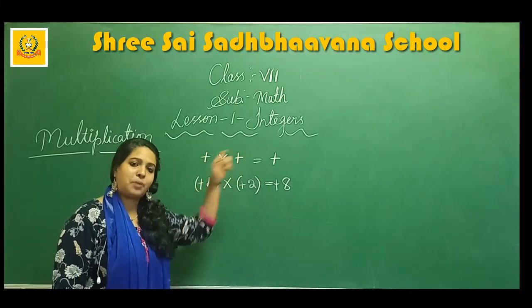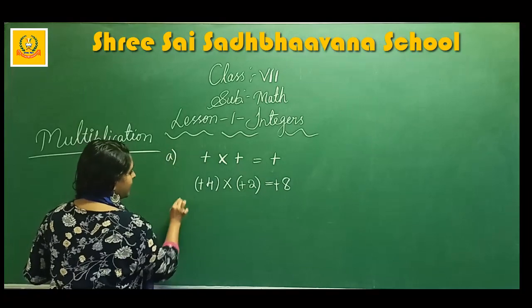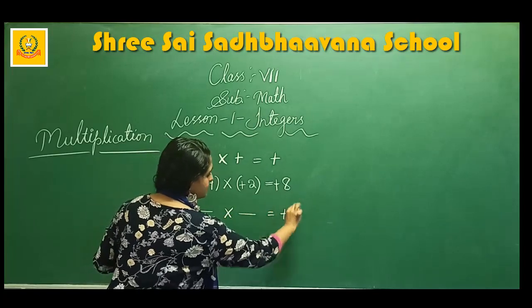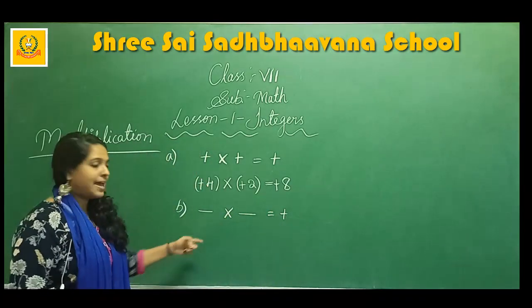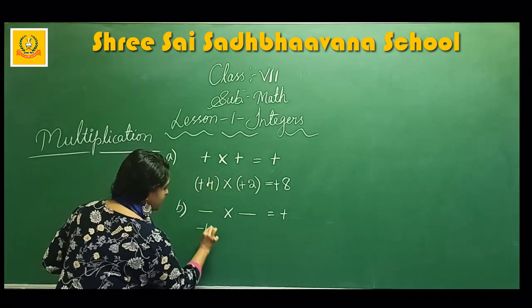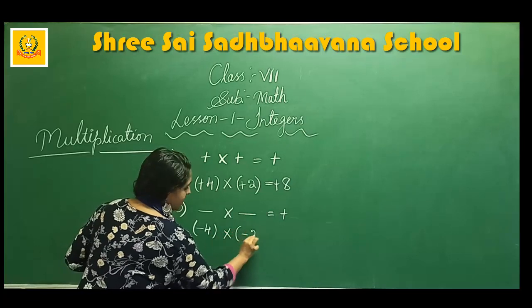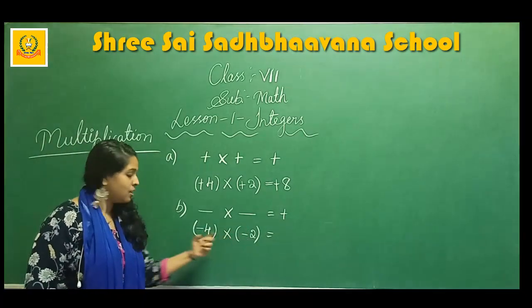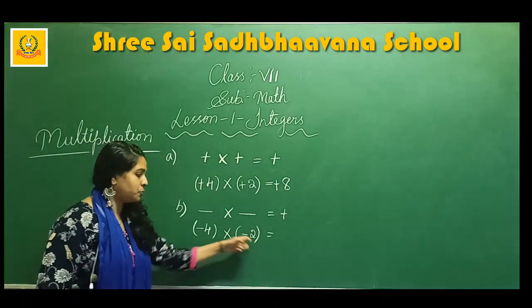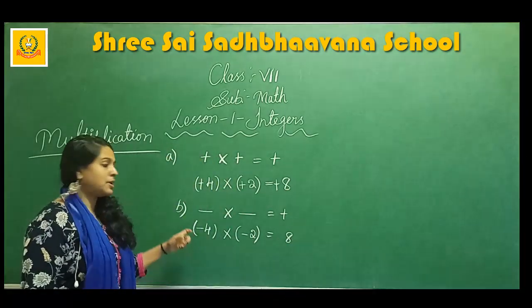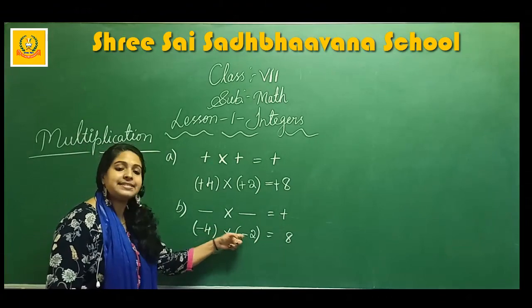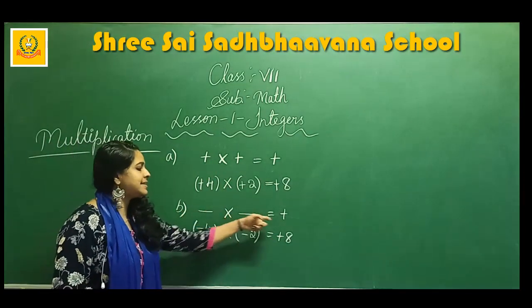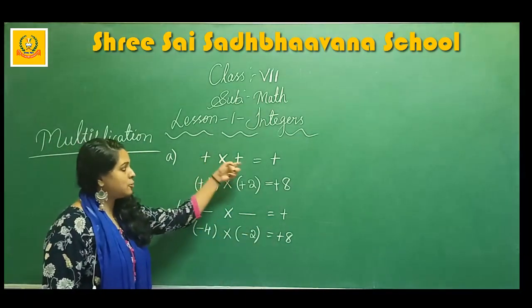Plus into plus it becomes plus only — positive into positive is positive. Second case: when there are two negative signs, negative into negative it becomes positive. Example: minus 4 into minus 2. First, forget about the sign and multiply only the whole numbers — 4 twos are 8. Now place the sign: minus into minus becomes plus, so place the positive sign before the product.